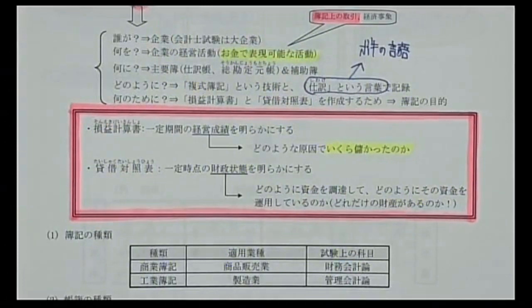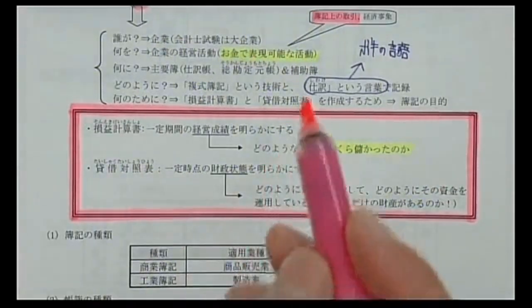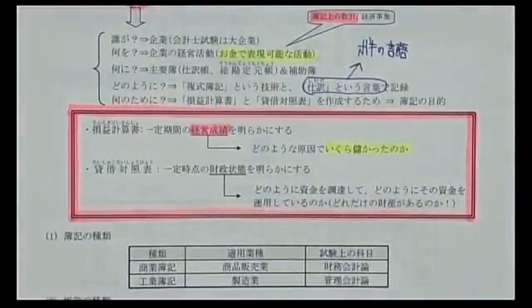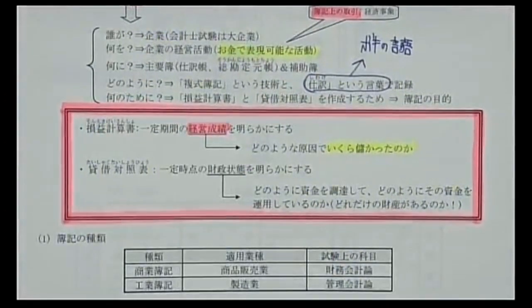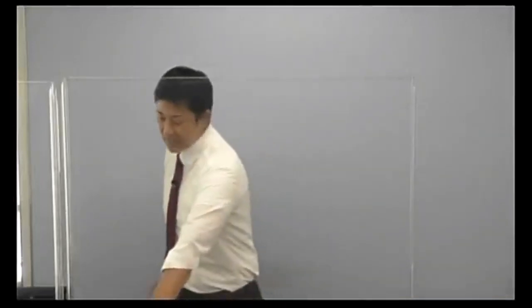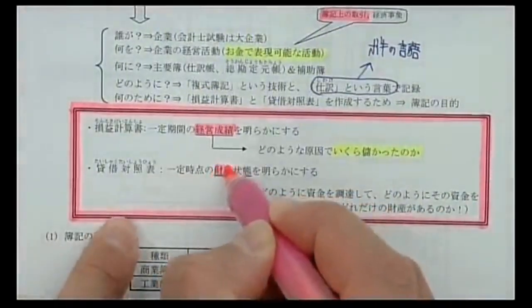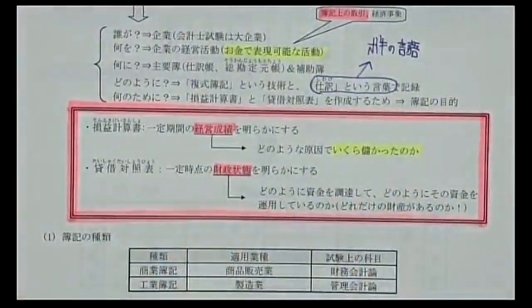損益計算書は一定期間の経営成績を明らかにします。経営成績とはいくら儲かったかということです。貸借対照表は一定時点の財政状態を明らかにします。財政状態とはどれだけ財産があるかということを示します。